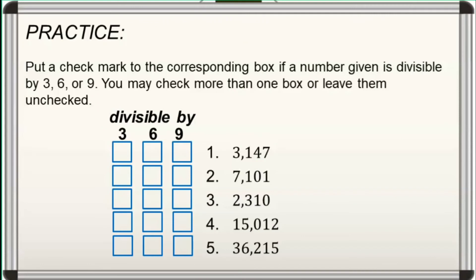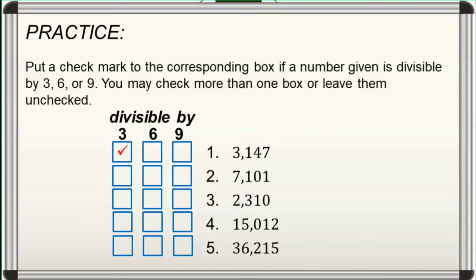Let's have more practice on this. Put a check mark to the corresponding box if a number given is divisible by 3, 6, or 9. You may check more than 1 box or leave them unchecked. You can pause the video if you wish to have more time in answering. Now, let us discuss the answers. For number 1, ang sum ng kanyang digits ay 15, so divisible siya by 3. But not by 6 kasi ang last digit ay 7 which means hindi siya divisible by 2. At hindi din siya divisible by 9 kasi ang sum of digits na 15 ay hindi divisible by 9. Hence, we only check the box for 3.